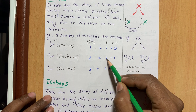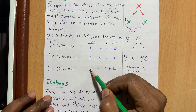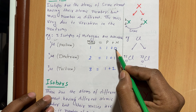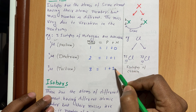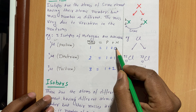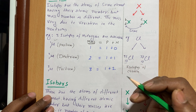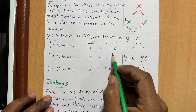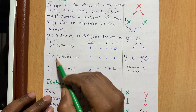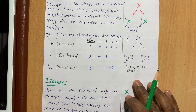All three isotopes have the same atomic number, but their mass numbers are different. Their mass numbers differ because the number of neutrons present in them varies. If the neutrons vary, the mass changes, and that is what distinguishes the isotopes.